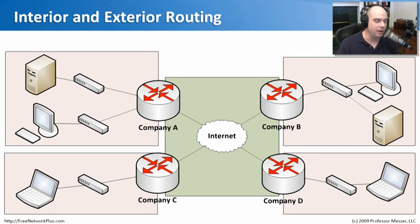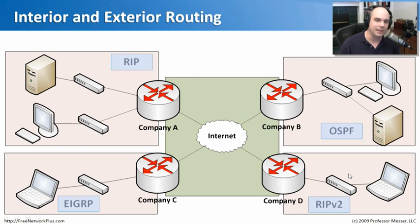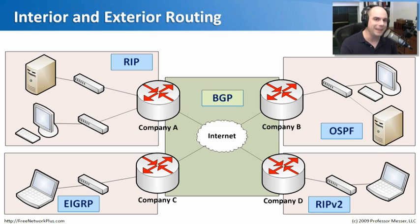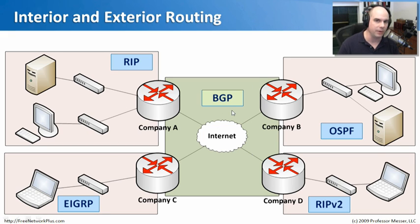Here's a good example: I've drawn four different companies — Company A, Company B, Company C, and Company D. Within these companies, they're all using their own internal gateway protocols. Someone might be running RIP, another OSPF, another EIGRP, and Company D is running RIP version 2. They can all be very different in how they operate, but they may still need to talk to each other over the internet. That's why we have BGP — this Exterior Gateway Protocol — to handle that communication.